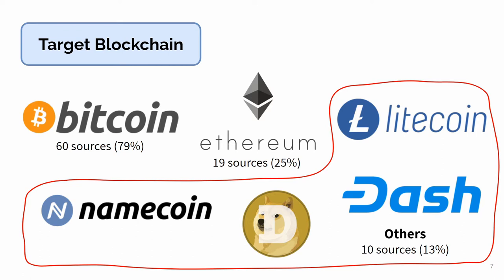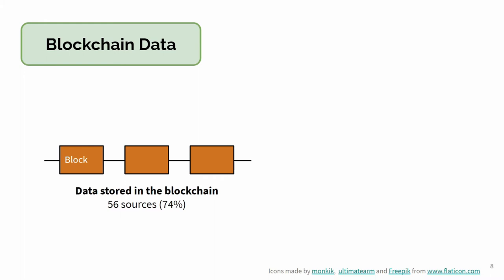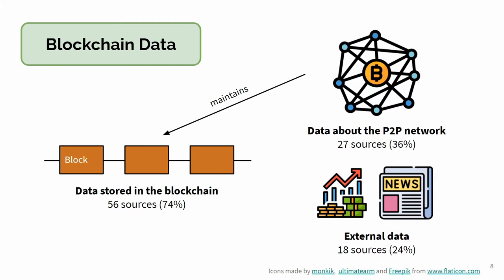For the blockchain data, the elements of blockchain can be simplified into three main components. The first component is data stored in the blockchain, which includes transactions, address, and blocks. The second component is the peer-to-peer network, which stores, validates, and maintains blockchain data, including information about nodes and mining activity. The third component is external data, such as market price, news, and social media, which affect the activity inside the blockchain network.